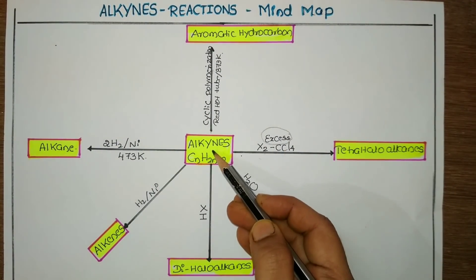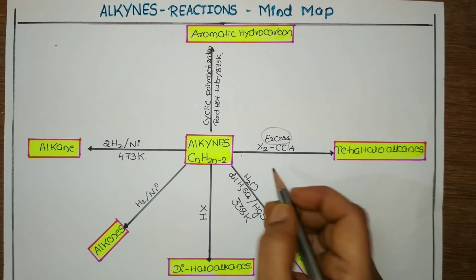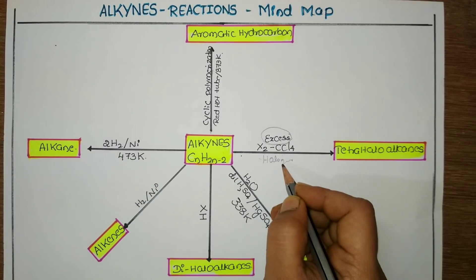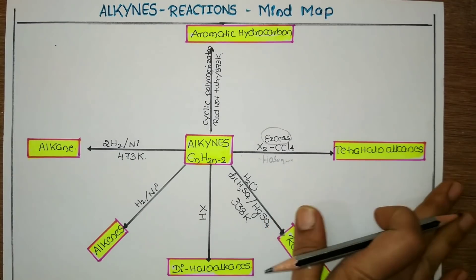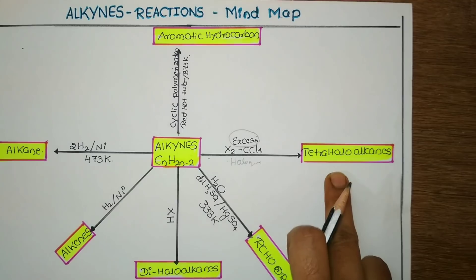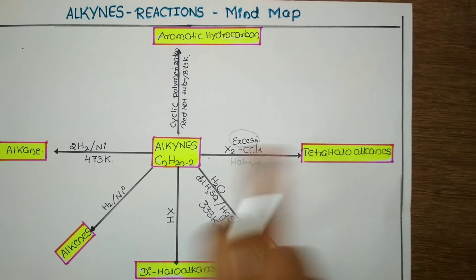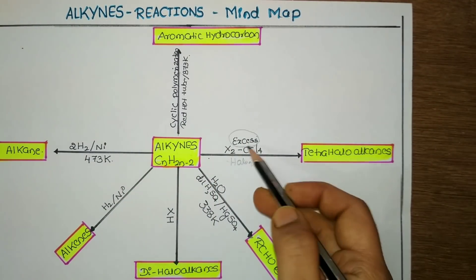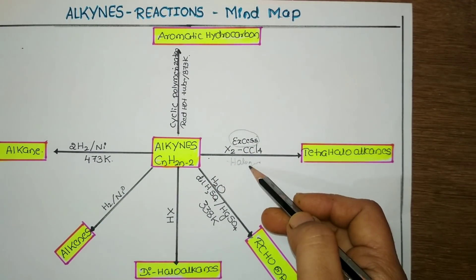When alkynes are treated with excess halogen, the same halogenation will occur, but instead of dihalo alkanes, you will get tetrahalo alkanes. You can compare this. This is one common method for alkenes and alkynes, only here excess halogen is used.